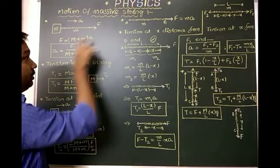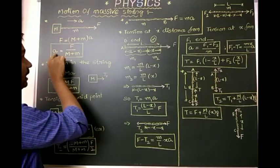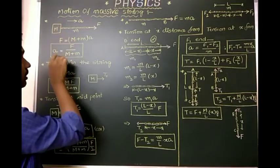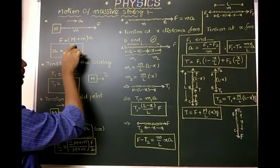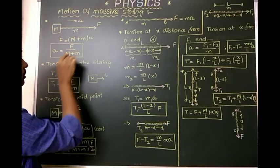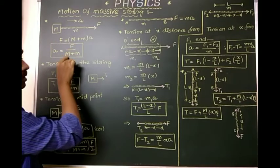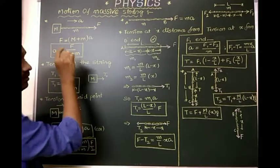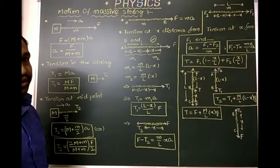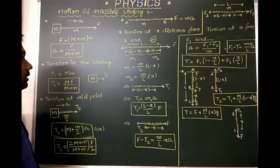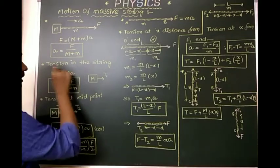Based on this, with respect to acceleration a, the acceleration of this block is a equals F (the applied force) divided by the combined mass of the block and the string, M plus m.